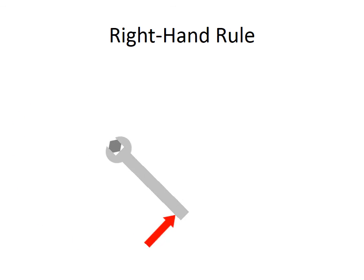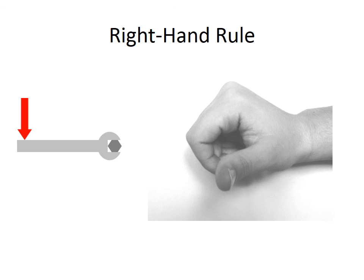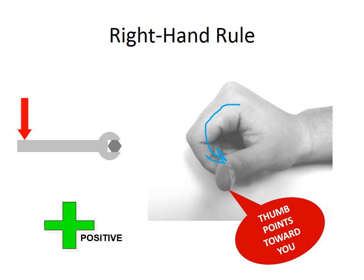So in this example, let's apply a force to our wrench and let's rotate counterclockwise. So what I'm going to do is I'm going to wrap my fingers in the direction of the rotation, so in this case it's counterclockwise, and my thumb then is pointing out towards me. That is a positive moment or a positive torque.